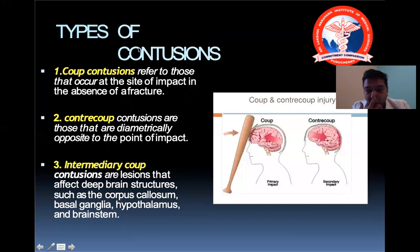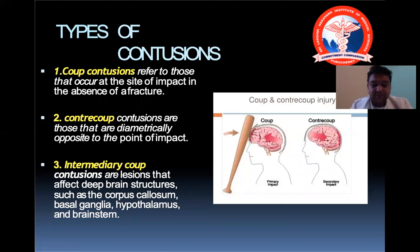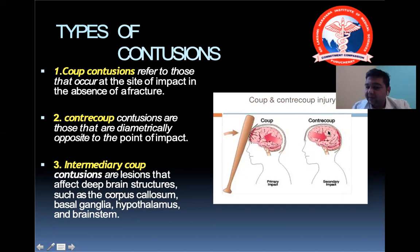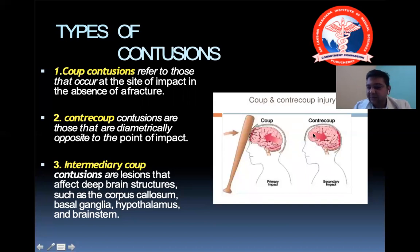The types of contusions are coup, counter-coup, and intermediary coup. A counter-coup contusion occurs at the opposite side due to the relative motion of the brain inside the skull. An intermediary coup contusion is a lesion affecting deeper brain structures such as the corpus callosum, basal ganglia, hypothalamus, and brainstem, resulting from transmission of forces through the midline.